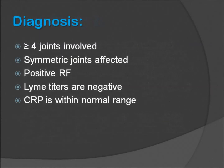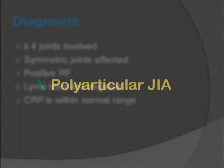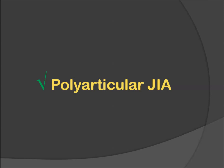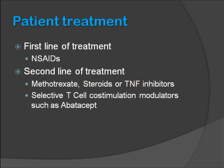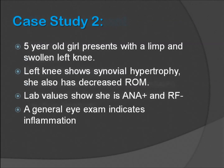Looking at the features she presents with in slide 16: she has more than four joints involved, the joints affected are symmetric, she has a positive rheumatoid factor, a negative Lyme test, and CRP within normal range. Her diagnosis is polyarticular JIA. The first-line treatment approach would be non-steroidal anti-inflammatory drugs, and the second-line treatment would be methotrexate, steroids, or TNF inhibitors. If these are unsuccessful, selective T-cell modulators such as abatacept could be an option.